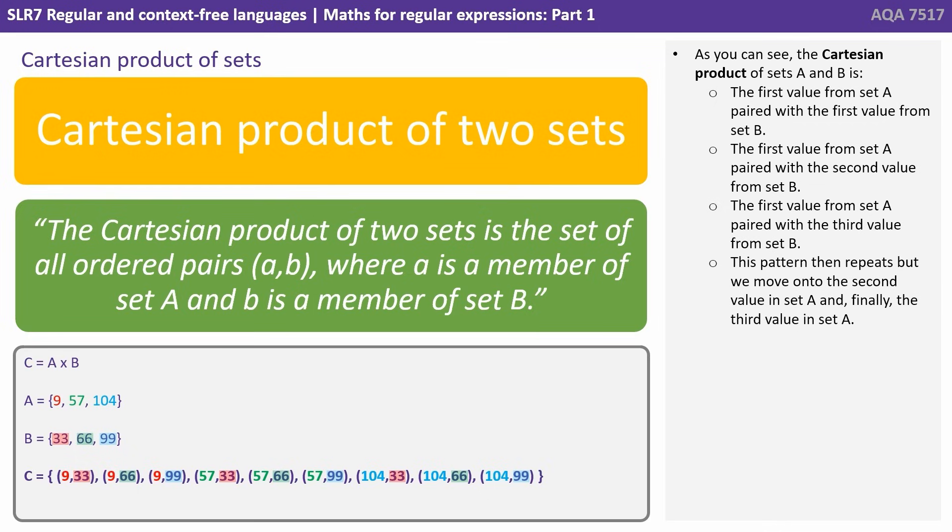As you can see the Cartesian product of sets A and B is the first value from set A paired with the first value from set B. The first value from set A paired with the second value from set B. This pattern then repeats, but we move on to the second value in set A and finally the third value in set A.